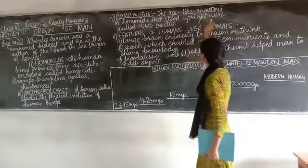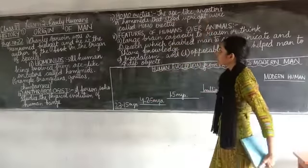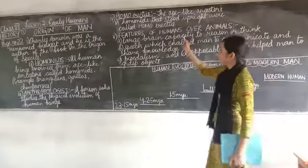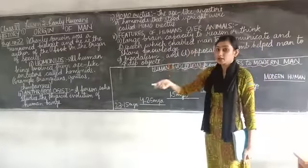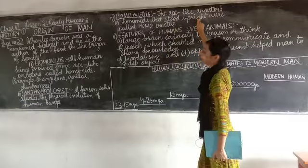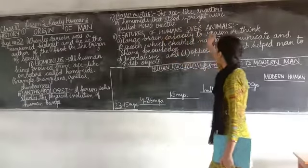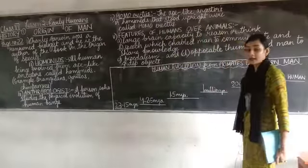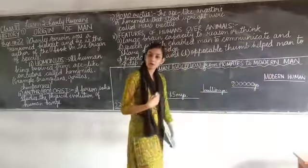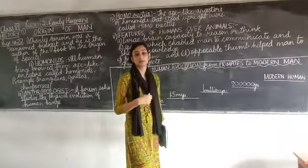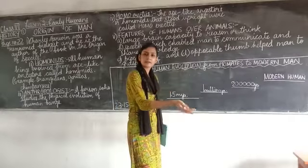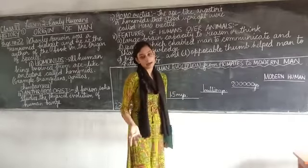The ape-like ancestors or hominids that stood upright were called Homo erectus. Always remember: erectus means erect, which means straight — they could stand upright. Now, features of humans over animals: we are also animals, but we are social animals. Animals that live in the wild are wild animals.